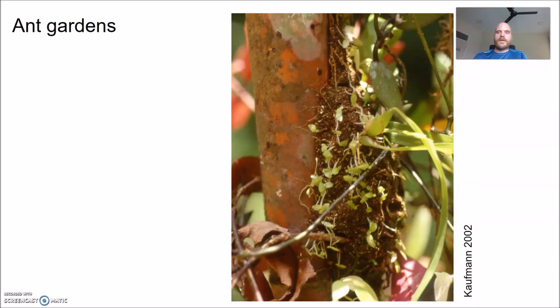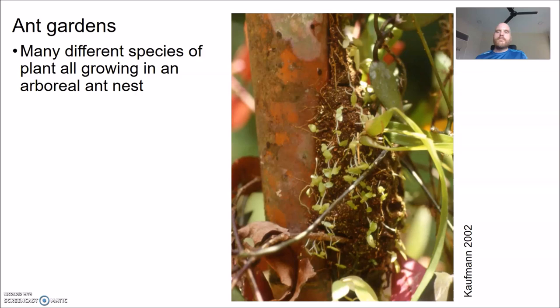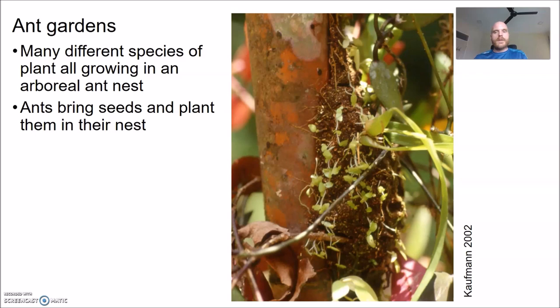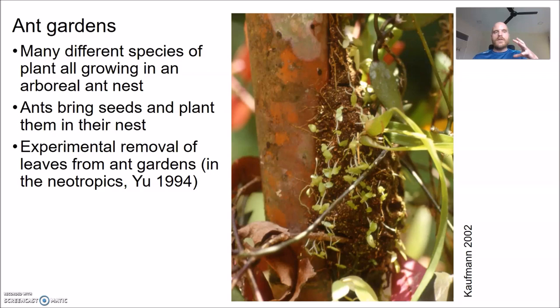Moving on to a different kind of ant-plant interaction: ant gardens. If you're walking in primary forests here, you might come across an ant garden — where many different plant species grow together on an ant nest up in the canopy. Ants pick up seeds and plant them into their nest. It's thought that this increases the structural stability of the ant garden: roots running through the nest make it less likely to fall off the tree, so the colony is less likely to fall to the forest floor.